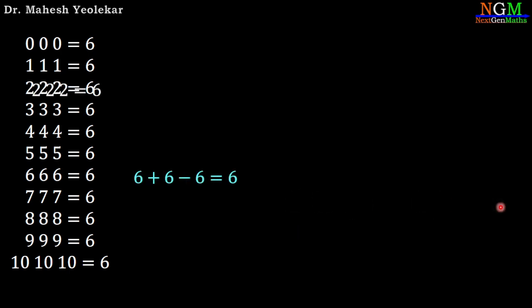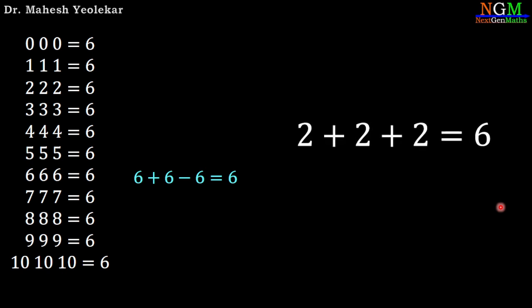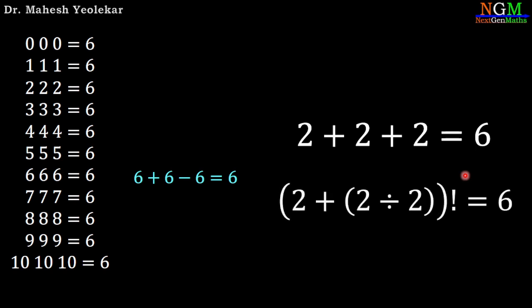Now the second equation: 2, 2, 2 equals 6. Apply the addition operation: 2 plus 2 plus 2 equals 6. Or 2 plus 2 divided by 2, so 2 plus 1 equals 3, and 3 factorial equals 6.